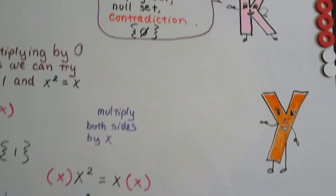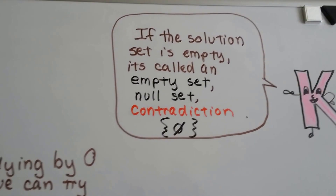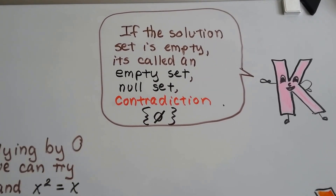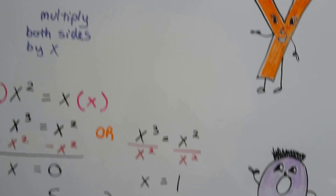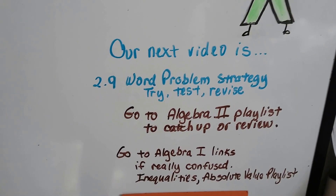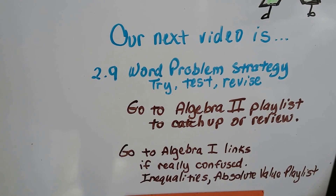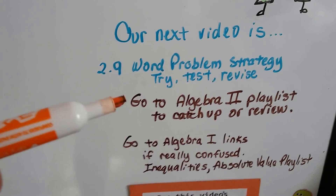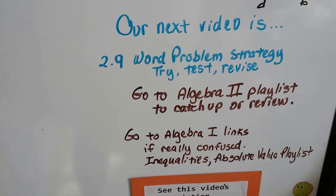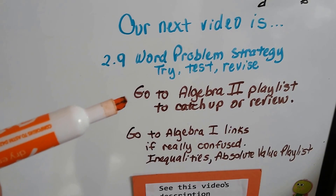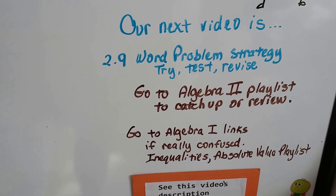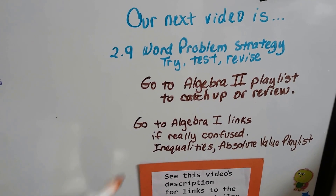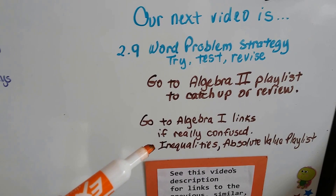Also remember, if the solution set is empty, it's called an empty set or null set, also called a contradiction, and we write it inside set braces with a zero with a slash through it. Our next video is 2.9, and we're going to do a word problem strategy called Try-Test-Revise — which we've done throughout grade school as Guess and Test. That's our next video before we go to chapter 3. This video and all previous videos will be in the description in the Algebra 2 playlist, and I'll have a link to my Algebra 1 chapter on Inequalities and Absolute Values playlist.